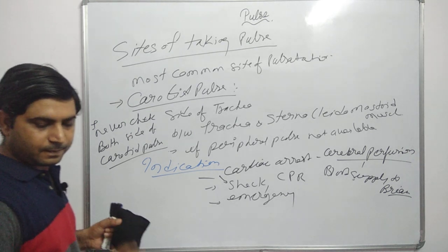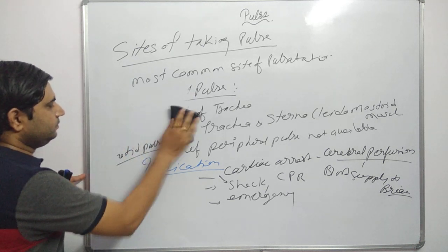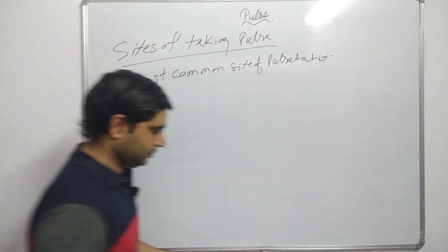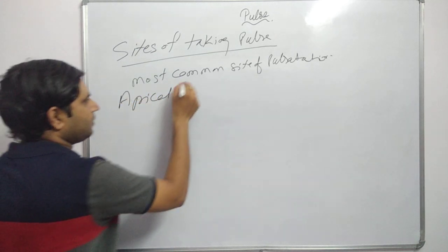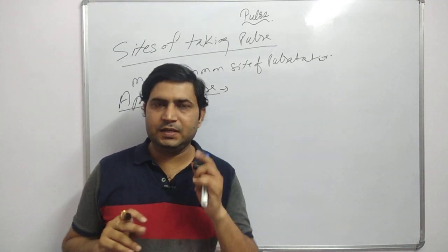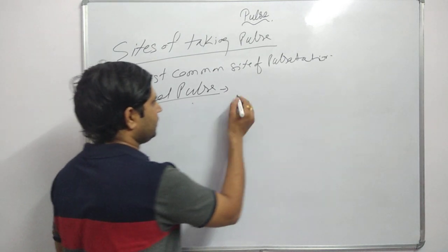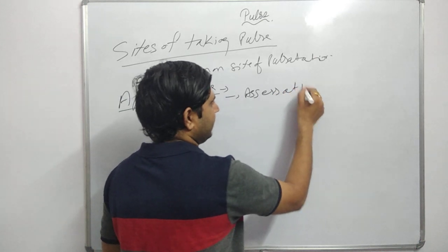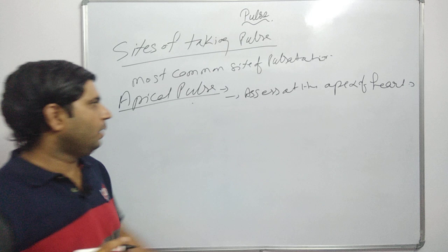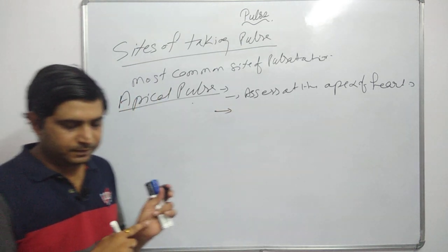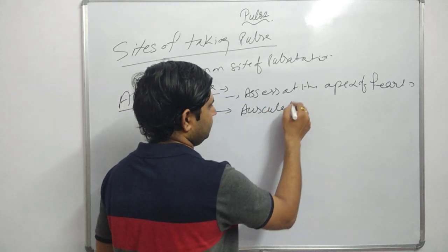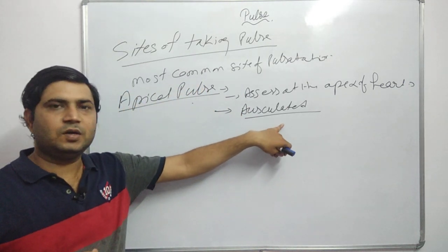Next is the apical pulse. The apical pulse is assessed at the apex of the heart. It is the only pulse which is auscultated. Auscultation is a physical examination term, and for auscultation we need a stethoscope. So questions can come from this: which pulse is auscultated? Answer: apical pulse. What equipment is used for ausculting the apical pulse? Answer: stethoscope.